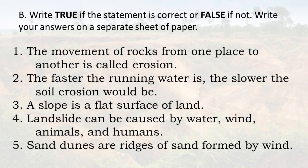Write true if the statement is correct or false if not. Write your answers on a separate sheet of paper. 1. The movement of rocks from one place to another is called erosion. 2. The faster the running water is, the slower the soil erosion would be.